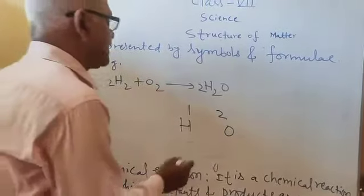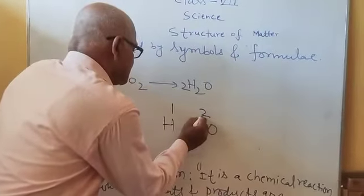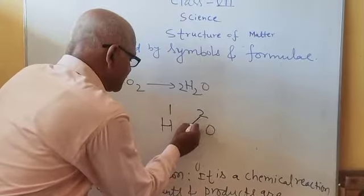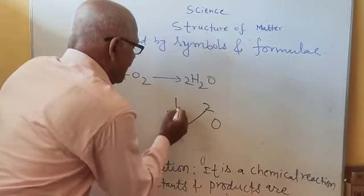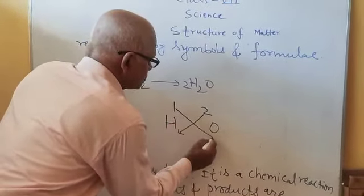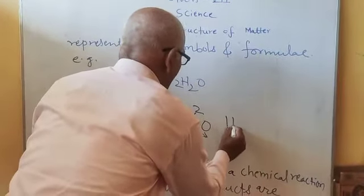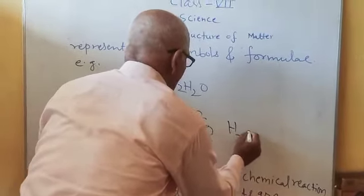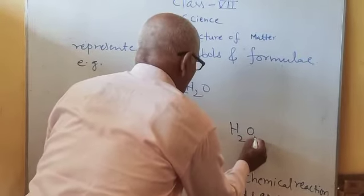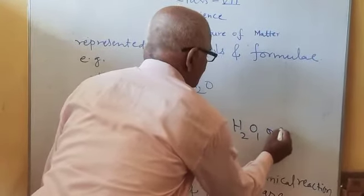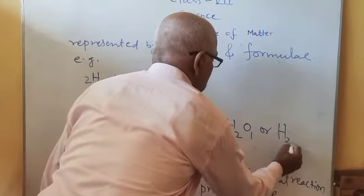Now interchange the valency. Two valency of oxygen comes near hydrogen and one valency goes to oxygen. So they form H2O and O1 or H2O.